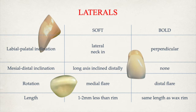For the lateral incisor, there are also two different setups: soft lateral or bold lateral setup, depending on what you're looking for. The soft lateral has the lateral neck in, long axis inclined distally, and rotation will majorly flare out. The length of the lateral incisor will be 1 mm less than the occlusal plane. The bold lateral setup will be perpendicular with no major distal inclination, making a distal flare.